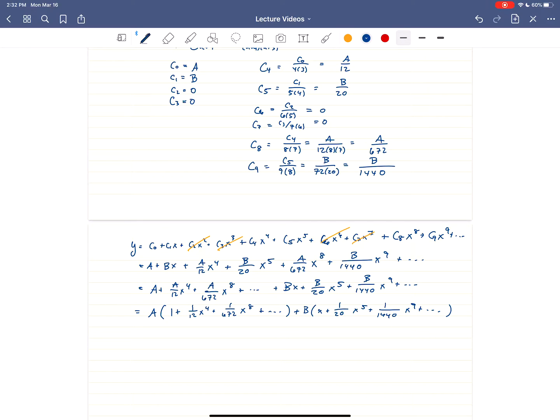Anyways, there's no elementary function like those that we can write our solution in terms of, so we're just stuck with these are our two solutions. So we have what I'm going to call A times y₁ plus B times y₂, and we have our two linearly independent power series solutions, and we're done.